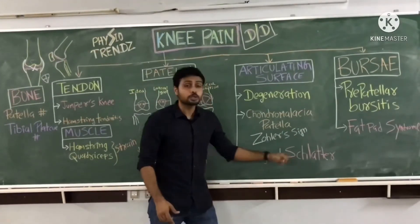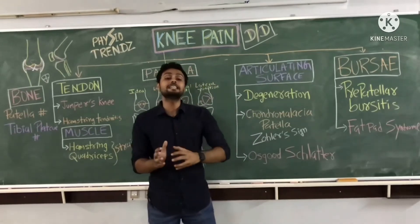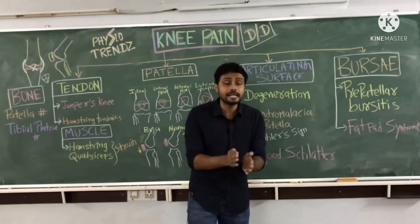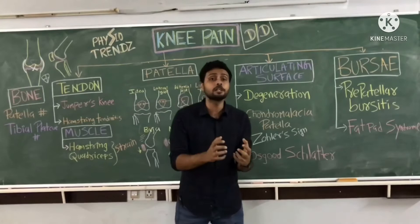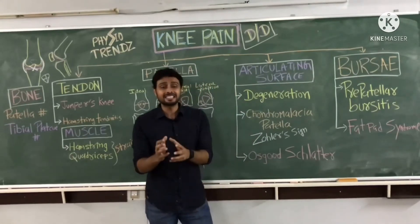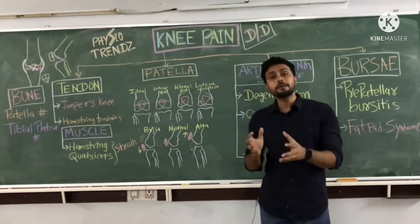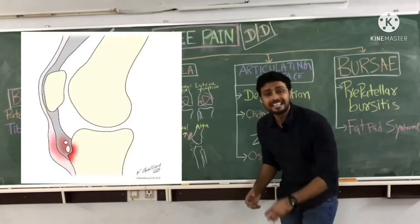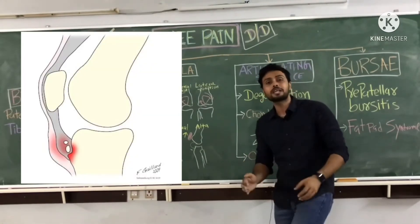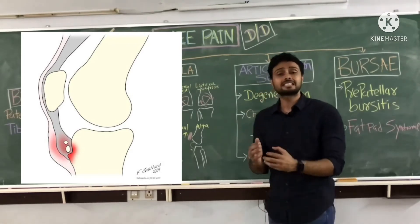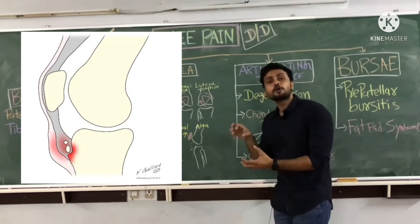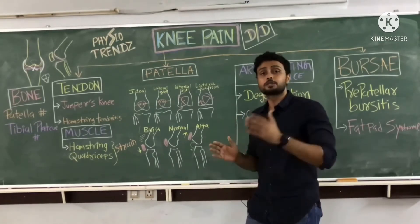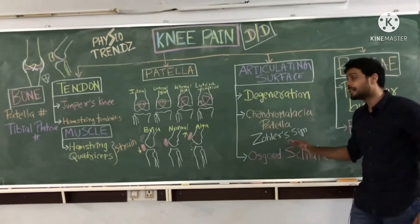The next condition is Osgood-Schlatter disease, a very common condition seen in young children who are more into sports and athletic activities. It is also known as osteitis because it is inflammation of the growing part of the bone, and it occurs mainly in persons who have more jumping activities. Because of this, the attachment of the patellar tendon at the tibial tuberosity gets continuously stretched, causing an extra bump formation just above the tibial tuberosity due to repeated contractions of the patellar tendon, resulting in pain and other symptoms.